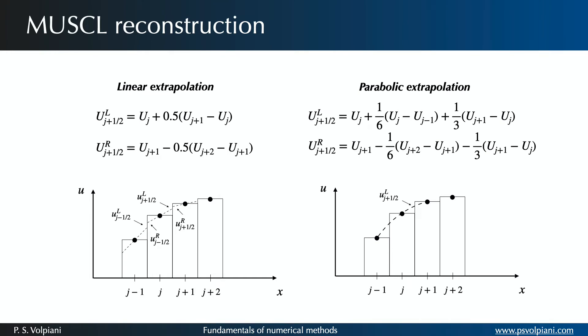In this case, the left and right states are estimated by interpolation of a second-order upwind-biased difference equation. This results in a parabolic reconstruction scheme that is third-order accurate in space.